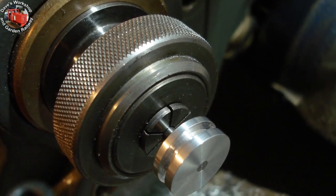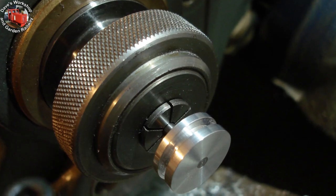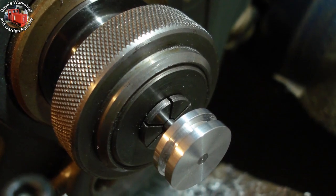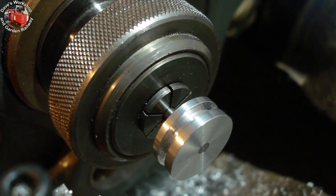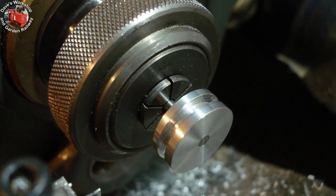The piston blank was first set up in the three jaw chuck, faced off, drilled 3.2 mil for tapping and then counterbored with a 5/32 slot drill for a quarter an inch.